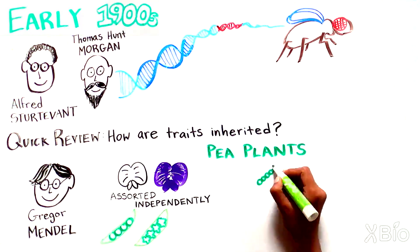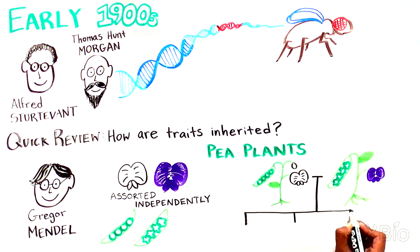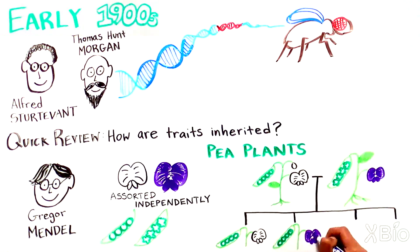assorted independently. If you breed a white flower, round pea plant with a purple flower, wrinkled pea plant, you can get any combination of these traits in the offspring plants.